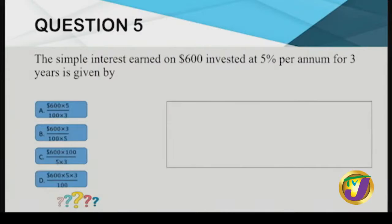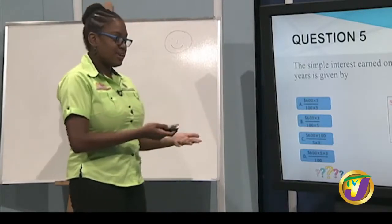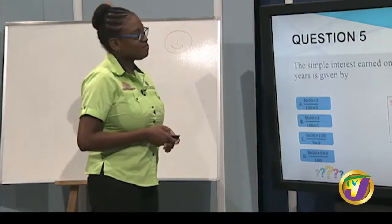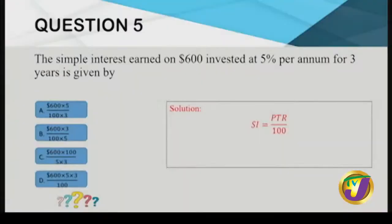Question five: the simple interest earned on $600 invested at 5% per annum for three years is given by — $600 is the principal, 5% per annum is the rate, and three years is the time. The simple interest formula is: SI = (Principal × Time × Rate) / 100.